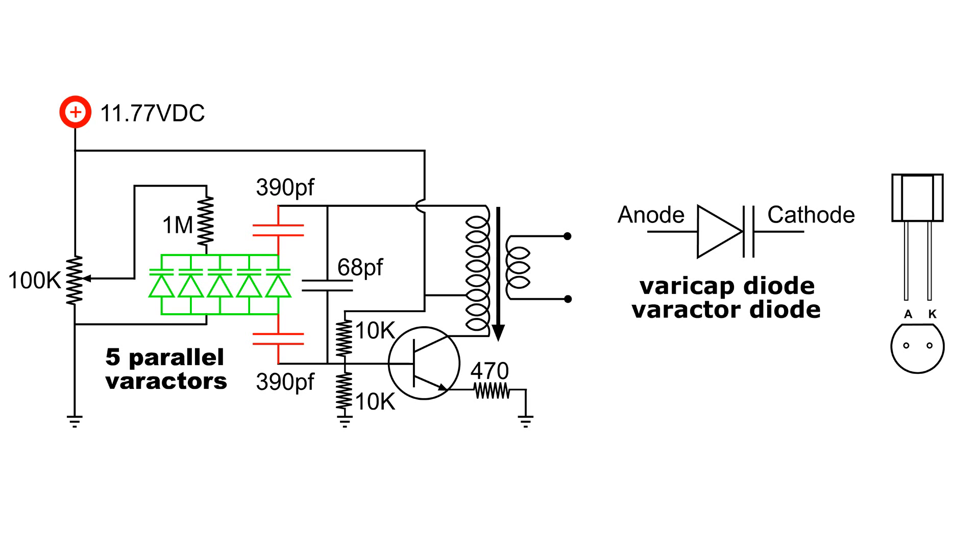The 390 picofarad capacitors isolate the varactors and the voltage that's applied across the varactors. It isolates that voltage from getting into the oscillator circuit.